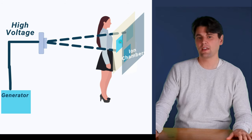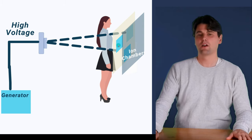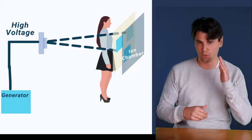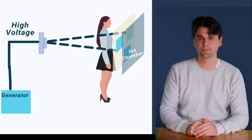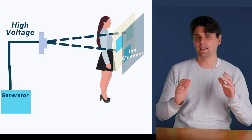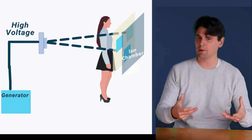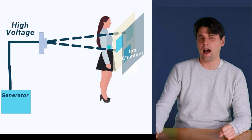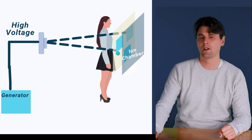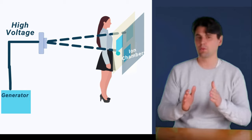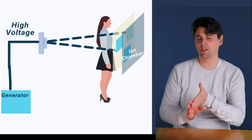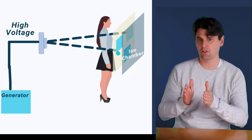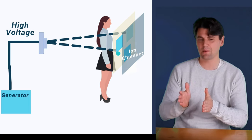Here you can see that the ion chambers are actually placed directly before the image receptor. These ion chambers can be calibrated out so that they're not visible in the actual image, but the ion chambers are going to be used to measure the radiation dose which is getting to those ion chambers, and hence the radiation dose which will be received at the image receptor.